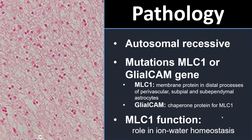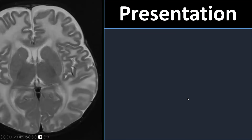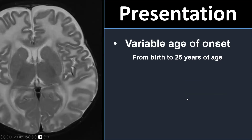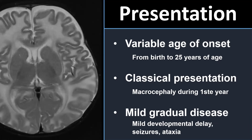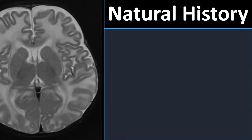Pathologically, we see a lot of water-containing vacuoles in the white matter, while on other slices the white matter is completely normal — normal axons, normal myelin content, normal oligodendrocytes — but with a lot of water located in the myelin sheath. Probably because of dysfunction in the water metabolism of the brain, you get a kind of white matter brain edema pathologically, which as seen on follow-up studies can regress over time. The clinical presentation is generally mild, with a variable age of onset ranging from birth to 25 years. The classical presentation is macrocephaly during the first year of life, with a mild and gradual course — mild developmental delay, seizures, ataxia, and mild spasticity. Many patients become wheelchair-bound in their teenage years, but the disease can be very variable.